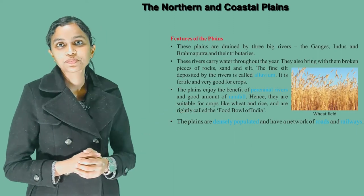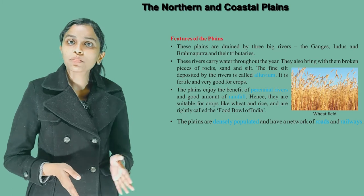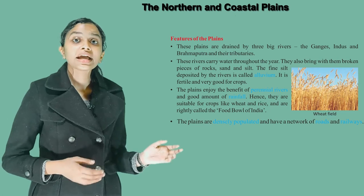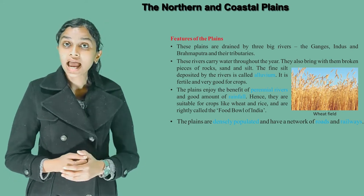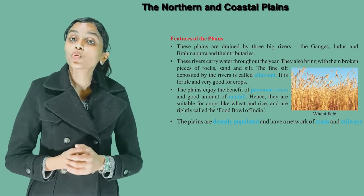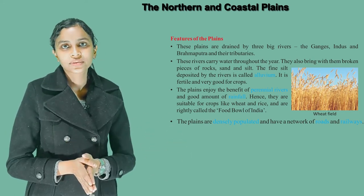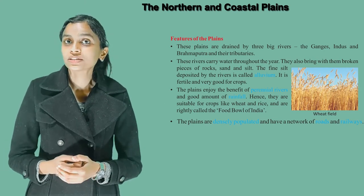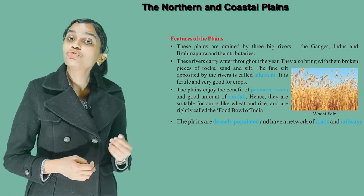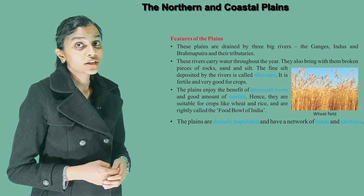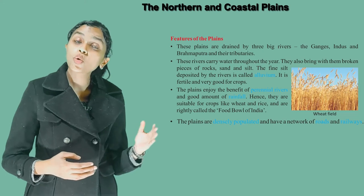Features of the Plains. These plains are drained by three big rivers — the Ganga, Indus and Brahmaputra — and their tributaries. These rivers carry water throughout the year. They also bring with them broken pieces of rocks, sand and silt. The fine silt deposited by the river is called alluvium. It is fertile and very good for crops. The plains enjoy the benefits of perennial rivers and good amount of rainfall. Hence, they are suitable for crops like wheat and rice, and are rightly called the food bowl of India. The plains are densely populated and have a network of roads and railways.